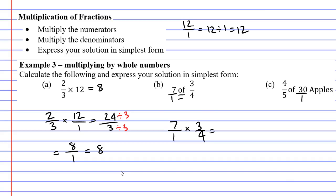Multiplying our numerators, 7 times 3 is 21, and multiplying our denominators, 1 times 4 is 4. We get a solution that is an improper fraction, 21 over 4.